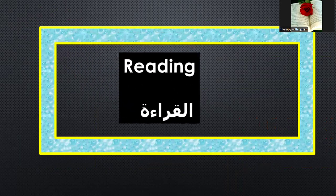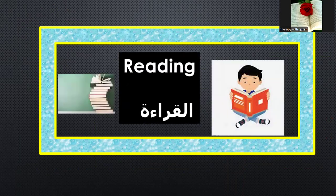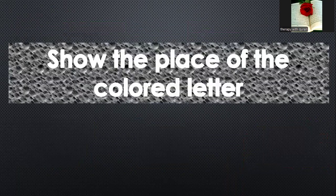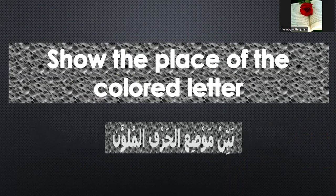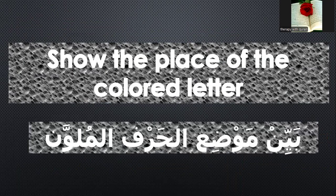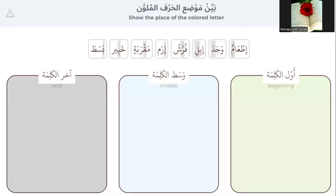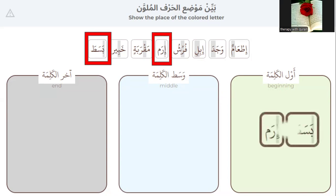The third group of questions: reading, to test your reading skills. The first question — show the place of the colored letter, bayin mawda'a al-harf al-mulawwa. Please look at the colored letter. Which colored letter is at the beginning of the word? Basapa and irama — two words.